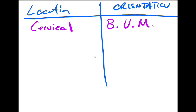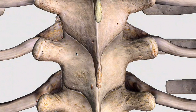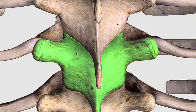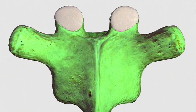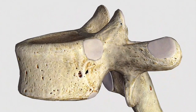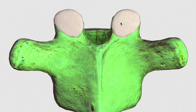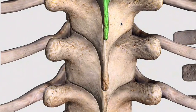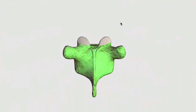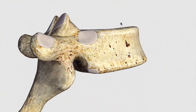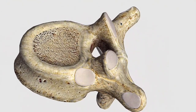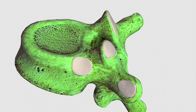In the thoracic region, the facets are oriented backwards, upwards, and laterally. If we take a look at one of these thoracic vertebral levels from a posterior view, the superior facets are located mostly backwards and upwards, and they say there's a little bit of lateral in them, which is kind of hard to see. But this is considered backwards, upwards, and lateral — you can see there's a little bit of a lateral turn to these facets.